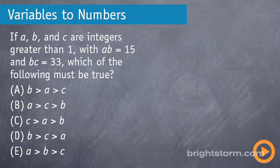If a, b, and c are integers greater than 1, with a times b equaling 15, and b times c equaling 33, which of the following must be true?